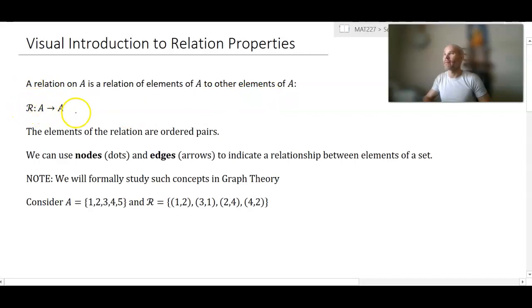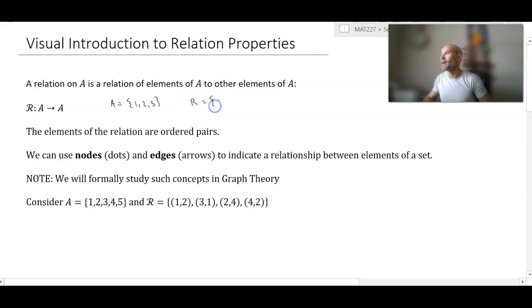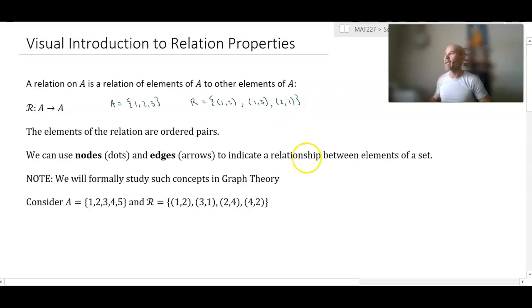The relation takes elements of A and maps them to other elements of A. So if I had a set of say three elements, all of the ordered pairs in this relation would be elements of A cross A. So maybe one gets paired with two, maybe one gets paired with three, and maybe two gets paired with one. That's an example of a relation on A — it depends on what the rule is for relating elements.